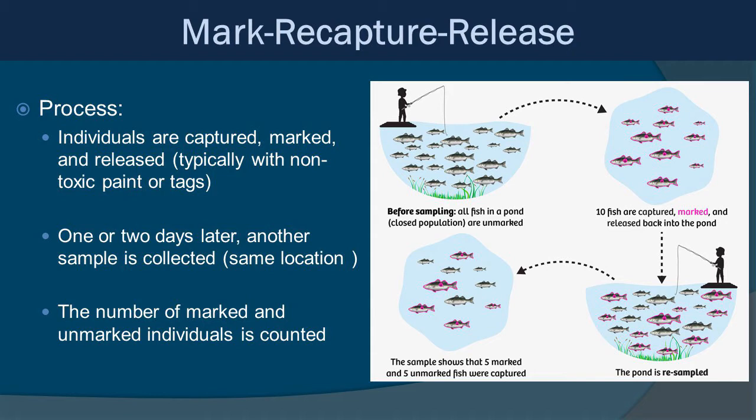A few days later, you come back and do another sample session where you collect another group of animals. This time you look to see if any of the animals you just collected have been previously tagged. The number of marked and unmarked individuals are then counted, as you can see in the graphic to the right. You have the before sampling, then those marked with pink outlines thrown back into the water, and then in the second sample session — in this case, five marked and five unmarked fish — giving you the ability to estimate the population size.